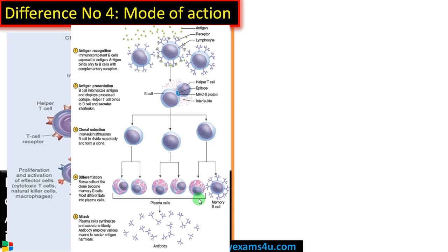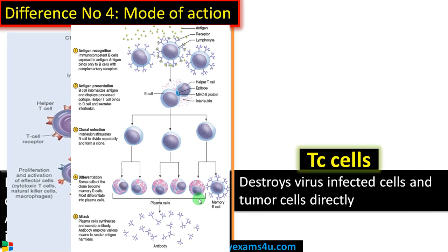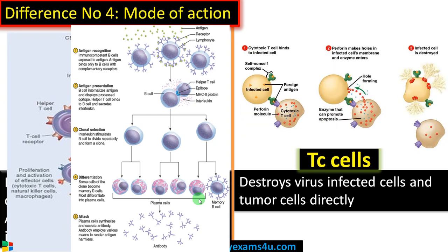That is why T helper cells are called key players in regulating the overall immune response, especially adaptive or specific immune response. In contrast, the mode of action of cytotoxic T cells is to destroy virus-infected cells or tumor cells directly. As you can see, any nucleated cell has an MHC class 1 receptor, and an infected cell will process the pathogenic particle and present it on MHC class 1.